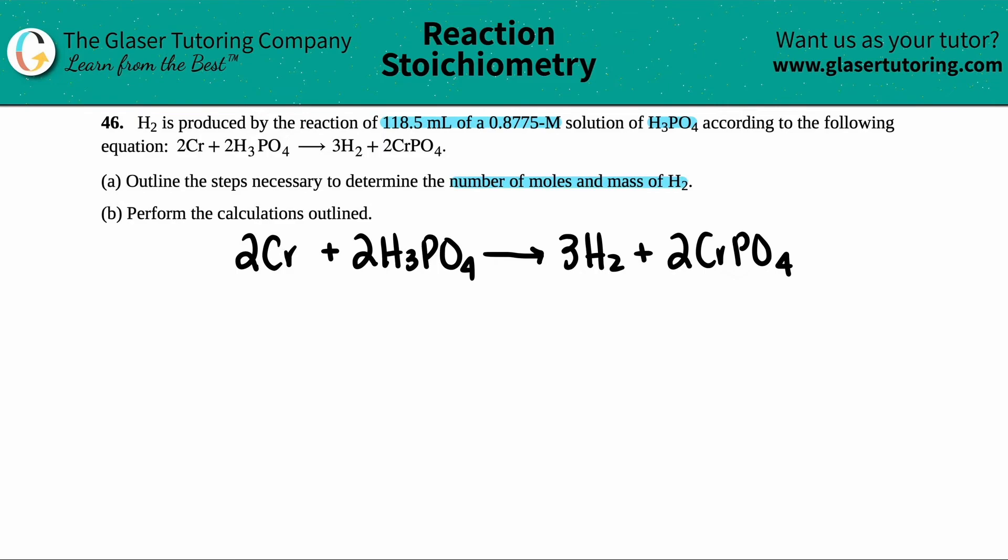The second thing that I like to do is I like to list out what they gave me underneath the compound that the information is for. So they gave me information for H3PO4. When you have a volume of a molarity solution, they go together. So both the volume and the molarity both go with H3PO4. So I have 118.5 mils, and then I have 0.875 molarity. They gave me two pieces of information for this.